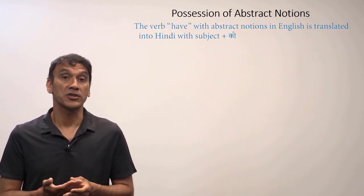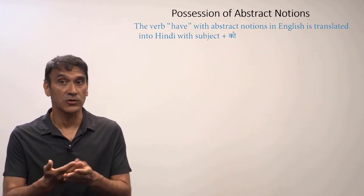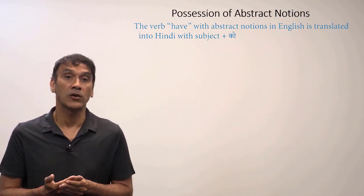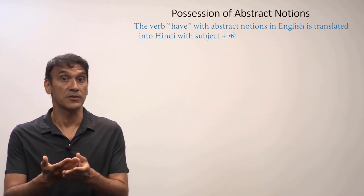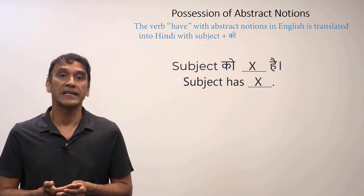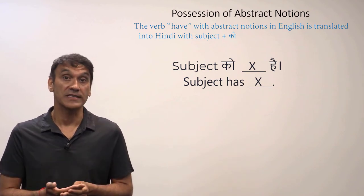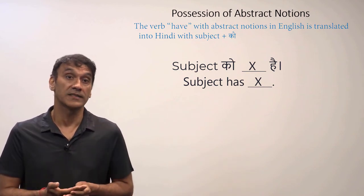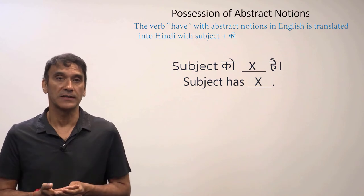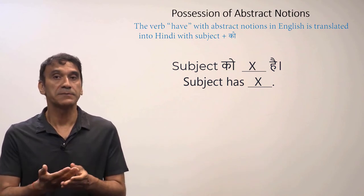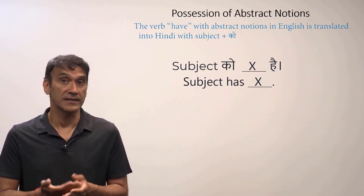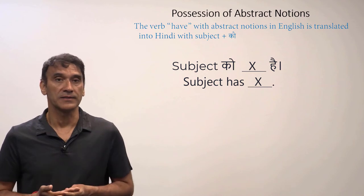Now we will learn how to express possession of abstract notions — how to use the verb 'have' with abstract nouns as the object. To express 'have' with abstract objects, Hindi uses the postposition 'ko' with the subject. The subject takes the postposition 'ko' and the verb 'hona' is in the third person.